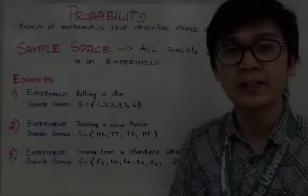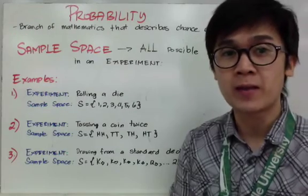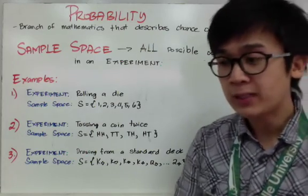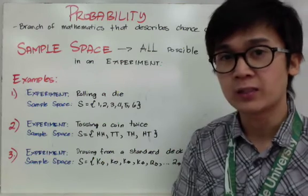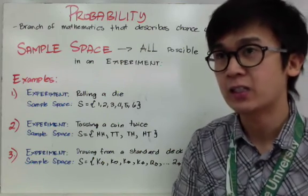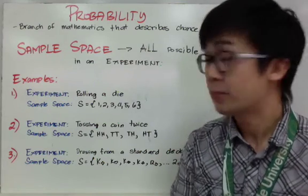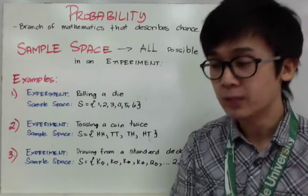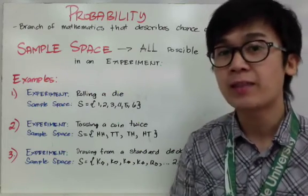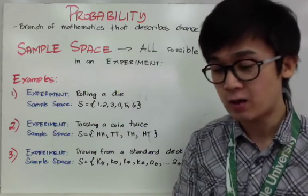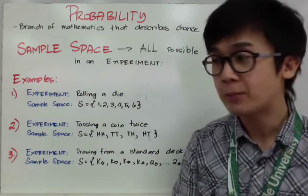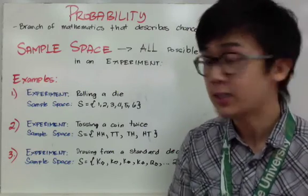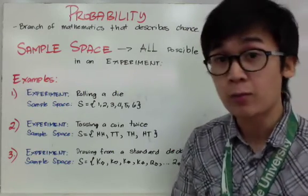By definition, probability is one of the branches of mathematics that describes the chance of outcomes. Probability is probably one of the most difficult concepts in statistics because it requires you to think. In probability, you need to visualize what is being asked in a problem. But probability is not that difficult if you know the technique on how to solve it, and I'm going to show you some techniques on how easy solving probability is.